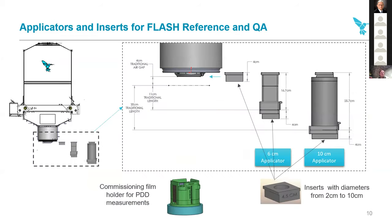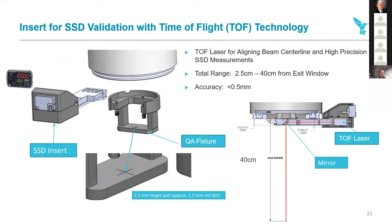The system comes with a set of applicators and inserts for reference QA. We chose three different points and a couple of different diameter field sizes to show the range of operation and compare what we make at the factory to what people see in the field, so they can do acceptance testing confidently. We also make a novel commissioning film holder designed to go in the water tank, attach to the end of the applicators, and do PDDs and quick shots on multiple films at once without tedious measurements — making QA faster and easier. It also comes with a time-of-flight laser system for accurate distance measurements when you have attachments for mice or human treatments, giving you an accurate distance range at the end of the collimator.